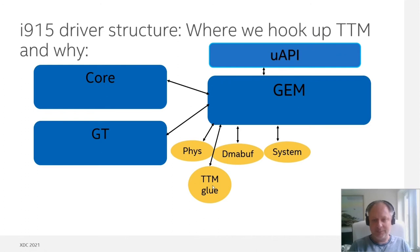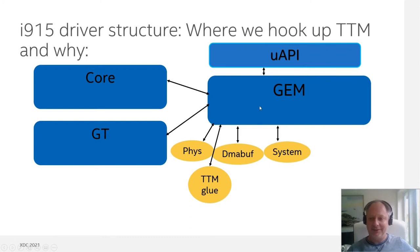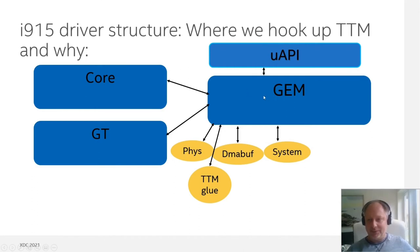Why did we choose to do it this way rather than simply replacing GEM with TTM? There are two short answers. One is that we have integrated GPUs as well that still need to use the system backend before porting over to TTM, if that happens. The other is that we have quite a lot of code in development that uses interfaces from within the GEM component that we might break by doing a very invasive TTM changeover. So this approach was chosen.